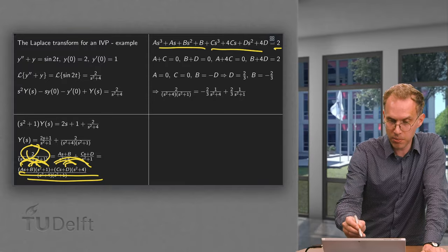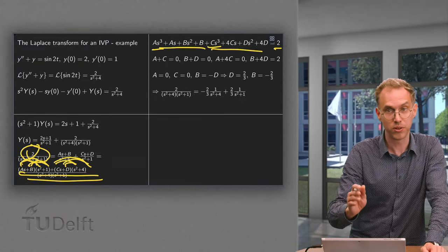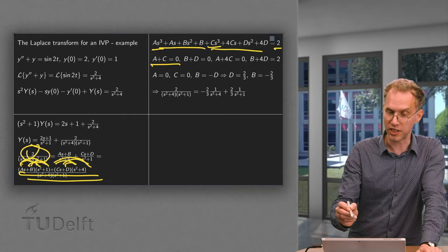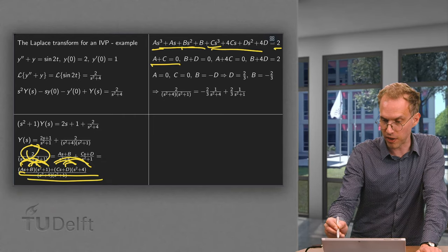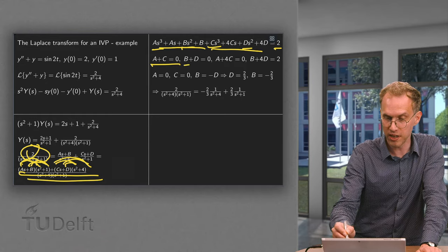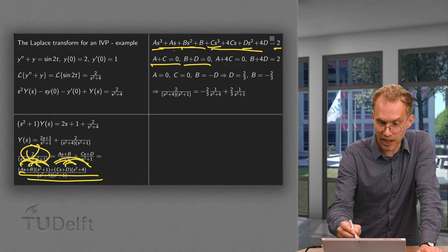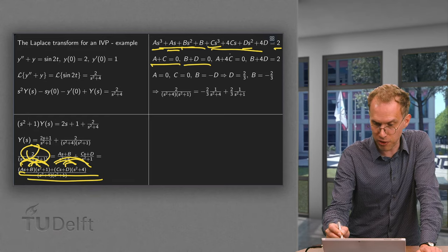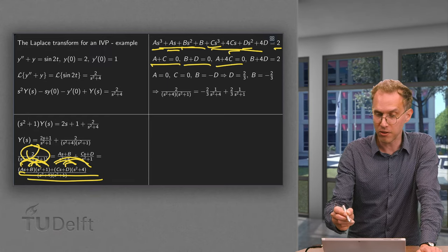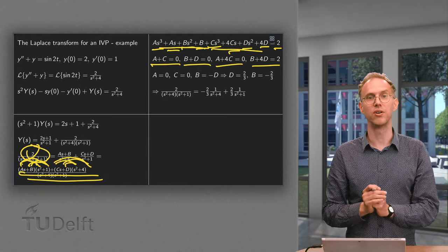Comparing powers of s: for s³, A + C = 0. For s², B + D = 0. For s, A + 4C = 0. And for the constant term, B + 4D = 2. So we have four linear equations with four unknowns.